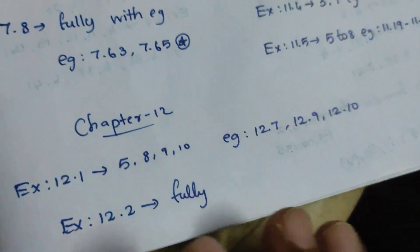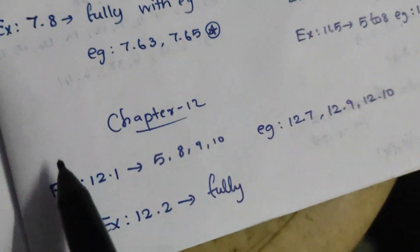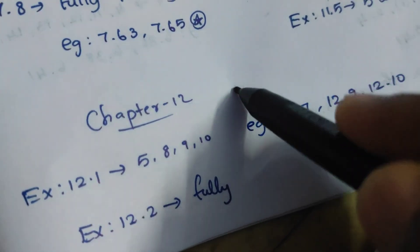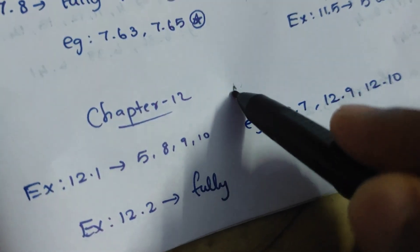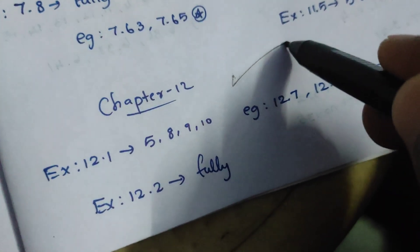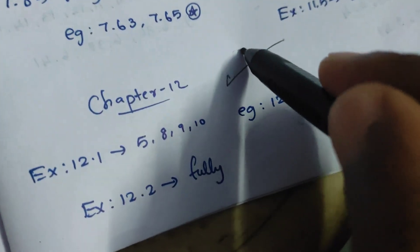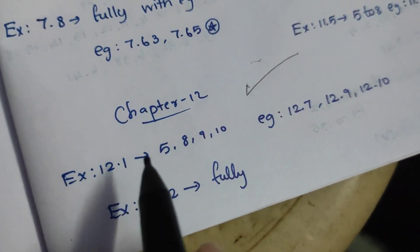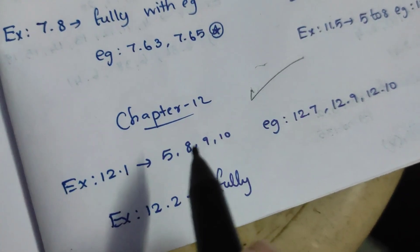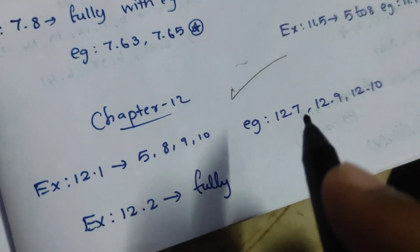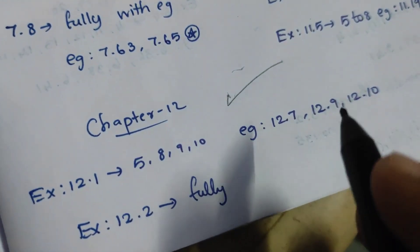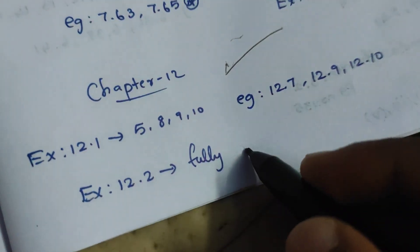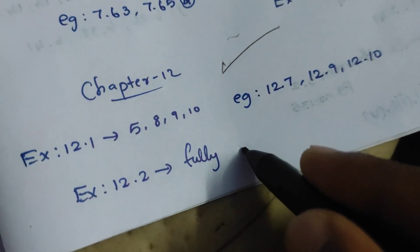Chapter 12. The 11th chapter is better. The 12th chapter is better. This is the maximum. Example 12.1. Example 12.7, 12.9, 12.10. This is the 11th chapter.